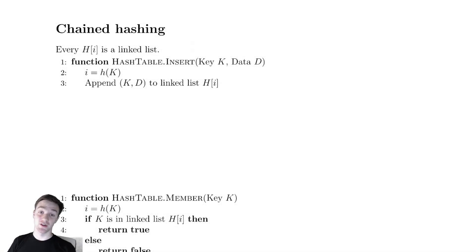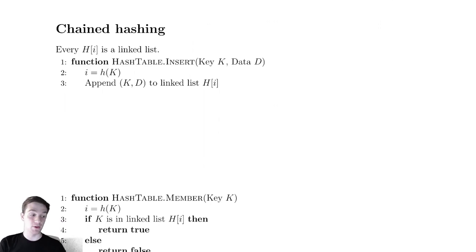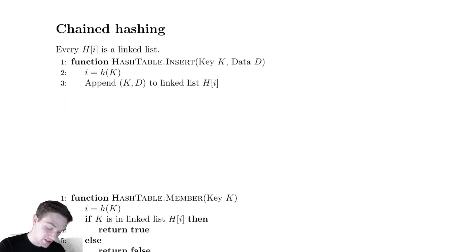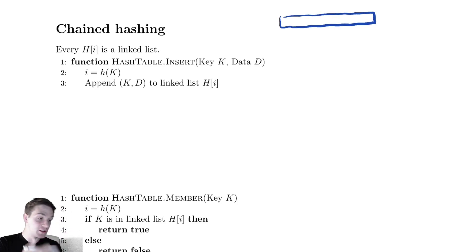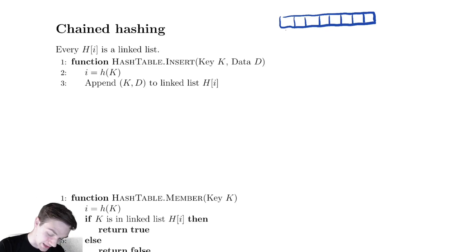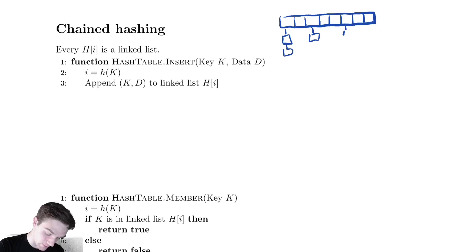In this video we're going to begin our discussion of chained hashing. First, let's remind ourselves what the idea of chained hashing was. We have our hash table, and at each location in that hash table we're going to have a linked list of values. Sometimes those linked lists may be empty, sometimes they may only have one element, and sometimes they may have many elements in them.